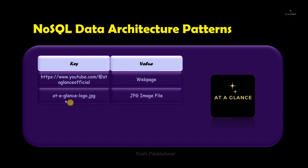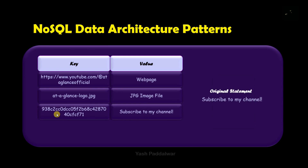The next example is the name of a file. For example, we have 'at-a-glance-logo.jpg'. This name is representative of the file present inside it, and note that the name of the file will always be unique in a particular directory. Hence the name is the key and the file which is present inside it is the value. Similarly we can have the key as the MD5 hash, which is a hash value generated for a particular value statement such as 'subscribe to my channel'. This hash value acts as the key and the original statement acts as the value.